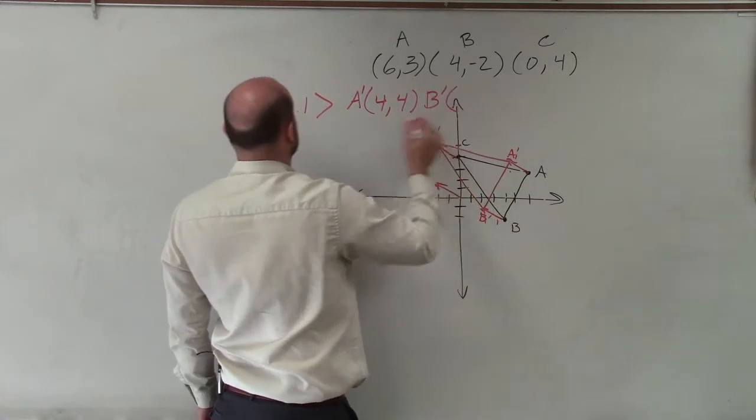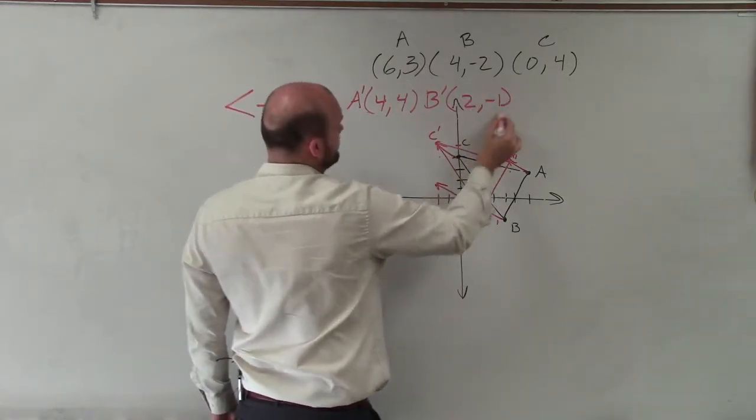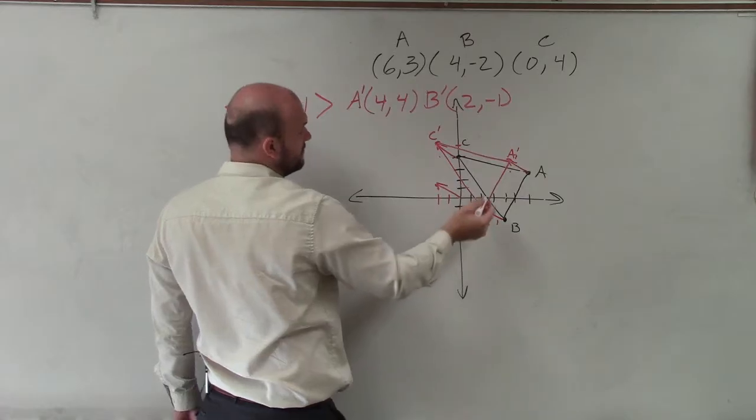B prime is going to be 2 comma negative 1. 1, 2, negative 1. Very good.